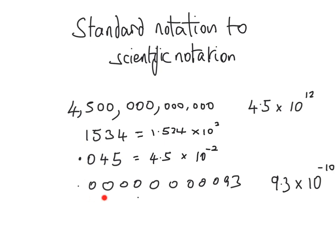Now let's look at this last decimal number. Again we look for the first non-zero digit, which is 9, and put a decimal point after it to get 9.3. Then we count how many places to the left of the new decimal point there are between this decimal point and the original one — there are 10 digits, so this is where we get the minus 10.